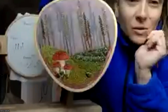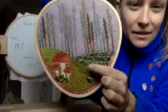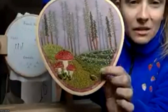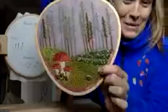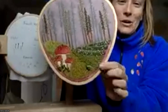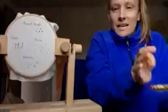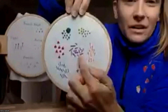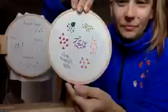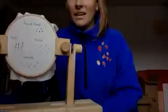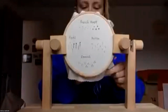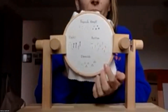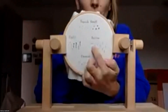Our next stitch is the bullion knot. You can see it on this piece — it looks like these long knots. I always think they look a little bit like worms, but they make fun texture and can be used to fill in space or as standalone stitches. So these purple stitches right here are also just the bullion knot on their own.